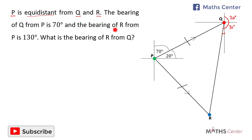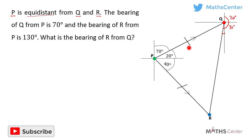The bearing of R from P is 130 degrees, given by the total angle from north. We already know that from north to east is 90 degrees, so the remainder is 130 degrees minus 90 degrees, which is 40 degrees. Looking at the diagram carefully, the 20-degree angle and the corresponding angle on the other side are alternate angles. From plane geometry, alternate angles are equal, so that angle is also 20 degrees.